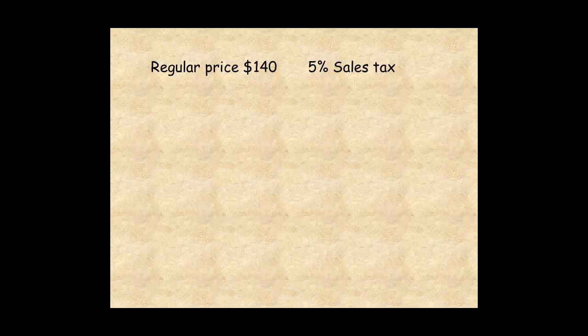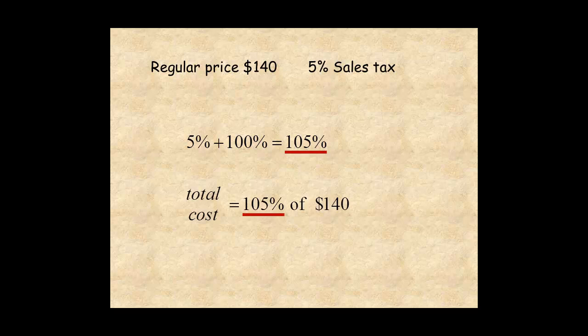Another way to do this is to add the sales tax percent to 100% for 105%. Then calculate 105% of the regular price, which is 1.05 times 140, and the total cost is $147.